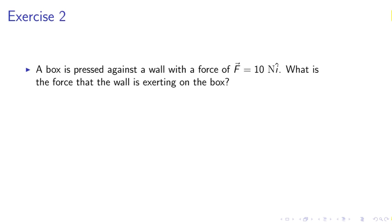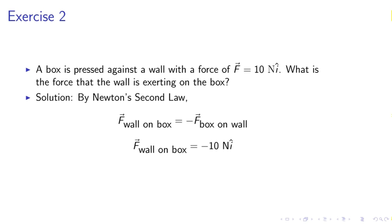Exercise 2. A box is pressed against a wall with a force of F equals 10 Newton i hat. What is the force that the wall is exerting on the box? Solution by Newton's third law, the force of the wall on the box equals negative the force of the box on the wall. F wall on box equals negative 10 Newton i hat.